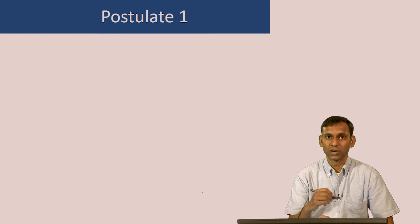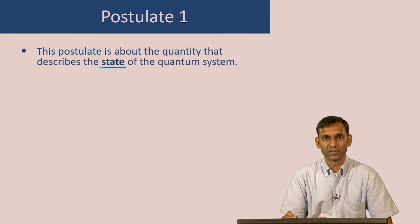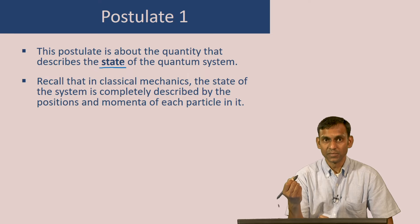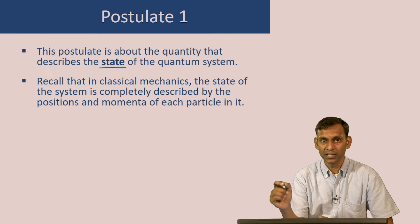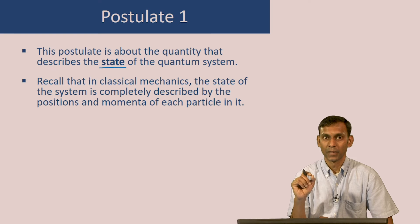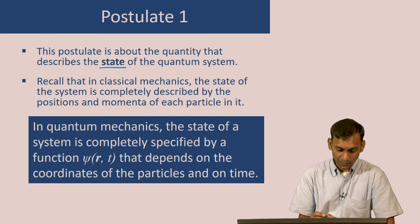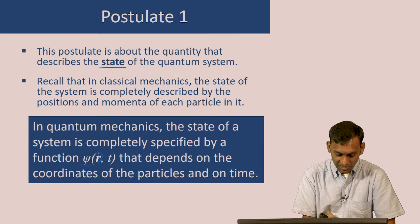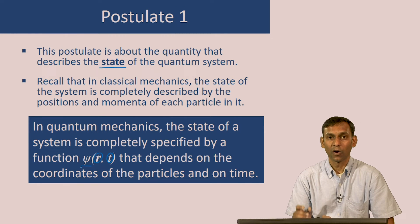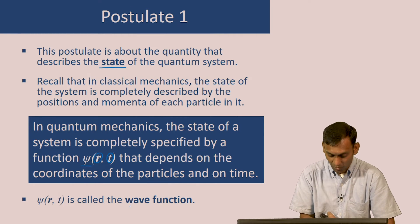Let us begin with postulate 1. This postulate is about the quantity that describes the state of the quantum system. In classical mechanics, the state of a system is completely described by the positions and momenta of each particle. If there is just one particle, knowing its position and momentum tells you everything. In quantum mechanics we postulate that the state of a system is completely specified by a function denoted psi, which is a function of the coordinates of the particle, vector r, and time. This function looks like the equation of a wave and is therefore called a wave function.